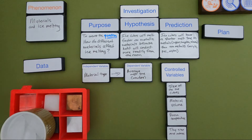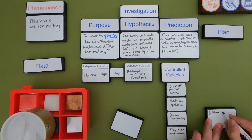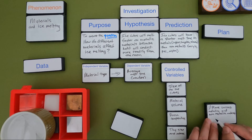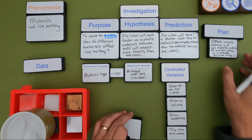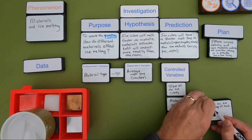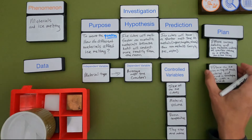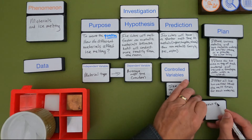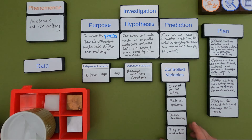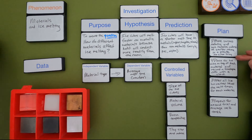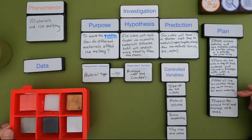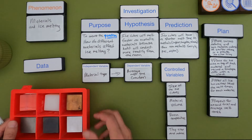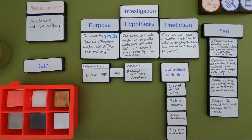Now I want to write up a plan that someone could follow to do this experiment again. I'm going to place the various metallic and non-metallic materials in the ice cube tray, making sure they have the same volume. Then I'll place an ice cube on top of each material and record a time-lapse video with a clock. After all ice has melted, I'll record the melt times for each material, repeat for a second trial, and then calculate the averages. Then I'll put together a data table.